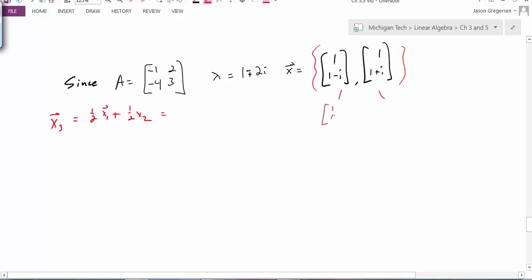This first vector will be 1, 1 minus i, times 0, 1. And the second eigenvector will be as conjugate, it will be 1, 1 plus i, times 0, 1. So now as I take that first eigenvector, I'll call this one x1, and I multiply that by a half,